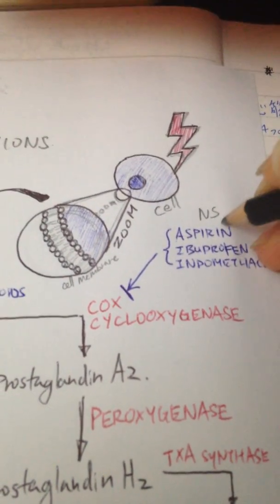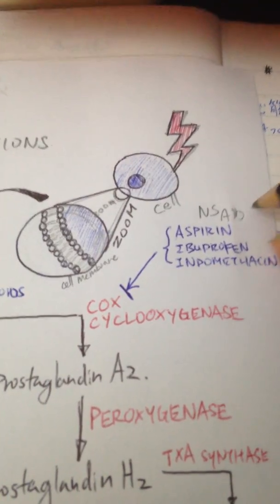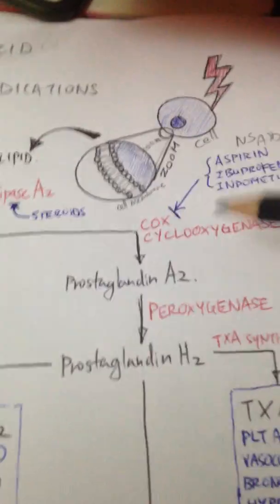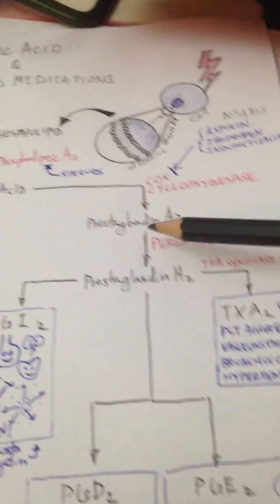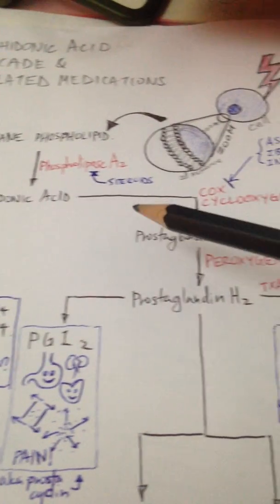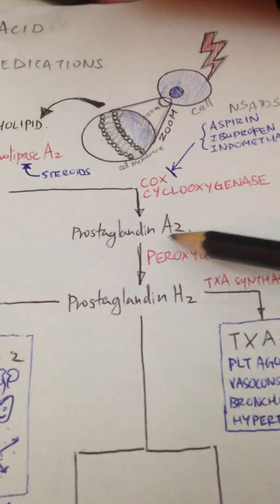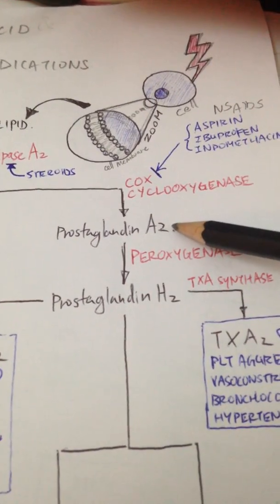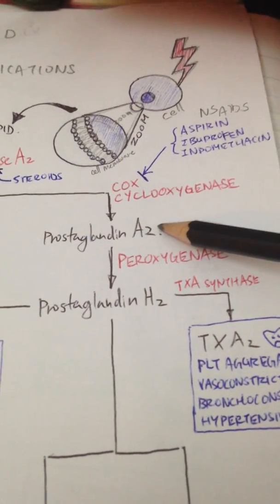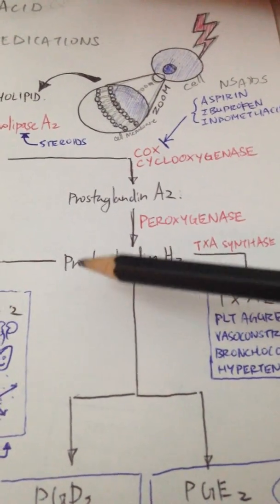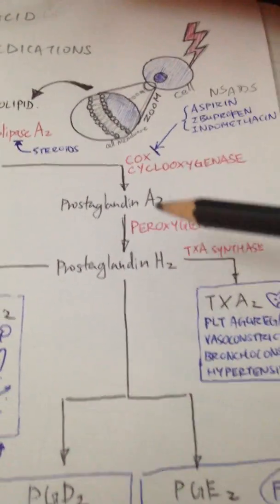You might have heard of NSAIDs, non-steroidal anti-inflammatory drugs. NSAIDs basically act on this COX. I'll come back to it later. From arachidonic acid, it gets into prostaglandin A2. This prostaglandin A2 is pretty unstable, so it becomes prostaglandin H2 pretty quickly.